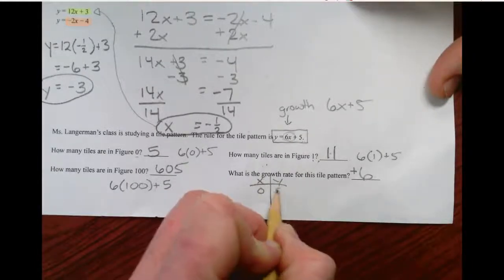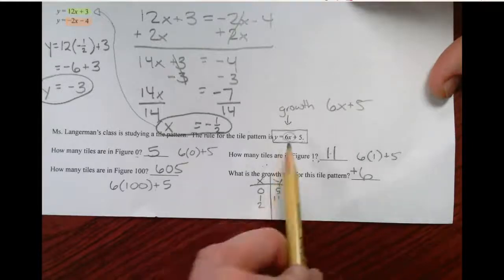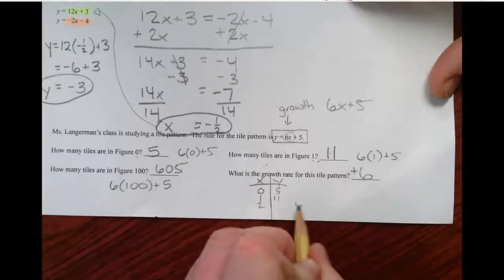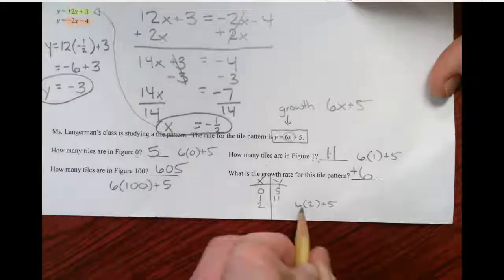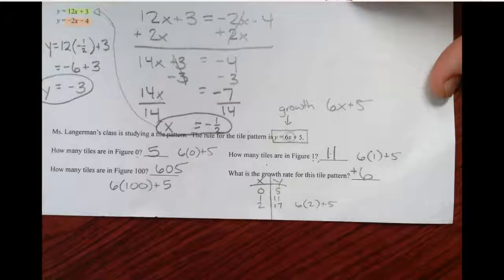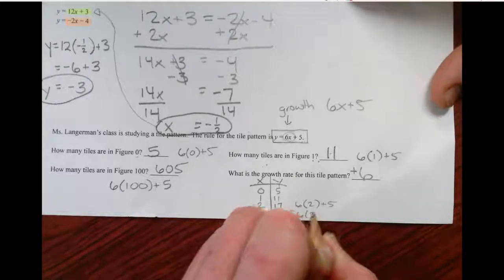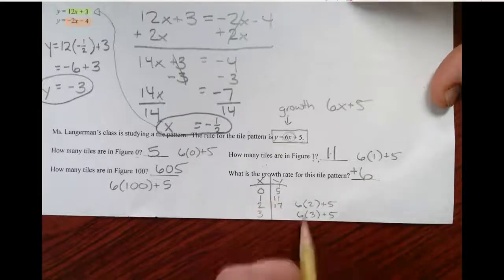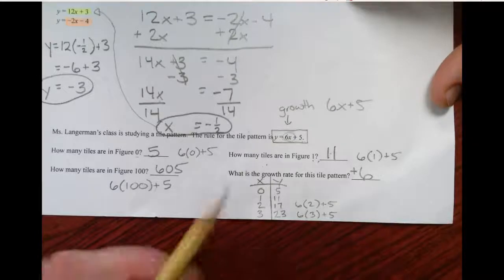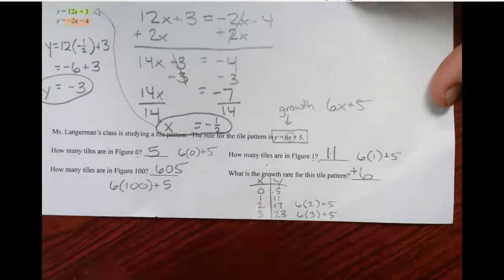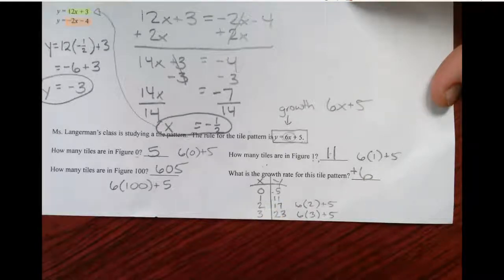Figure 0 has 5. Figure 1 has 11. Figure 2, if I plug 2 in, 6 times 2 plus 5. Oh, that's 12 plus 5. That's 17. Oh, look. We're growing by 6. If I put 3 in, I get 18 plus 5. Oh, that's 23. Beginning. Figure 1. Growing by 6. Okay.